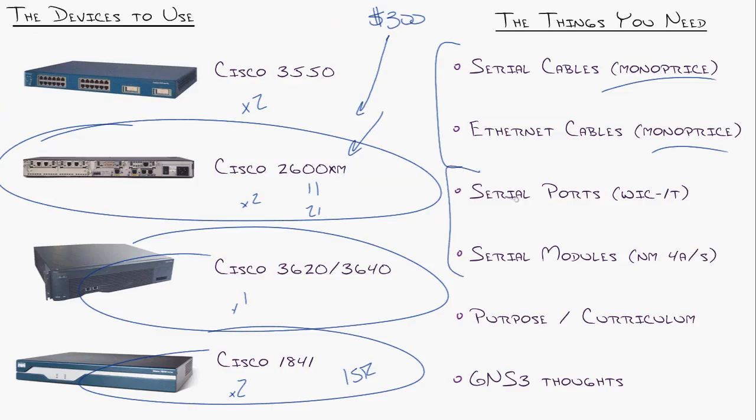Serial ports. You want to make sure that you get some WIC 1T modules for these guys, the 2600XM, which are your serial ports that go in. Now, I'm actually seeing right here in this graphic, if you look really close, that's a WIC 2T, which is an amazing invention from Cisco because they squeeze two serial ports onto one module. However, more expensive, cables are more expensive, not as common as these things that you can find everywhere.